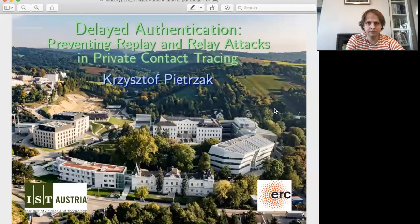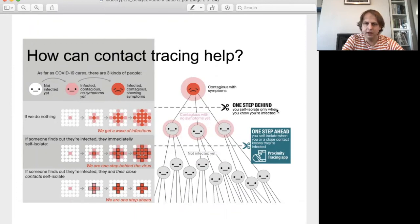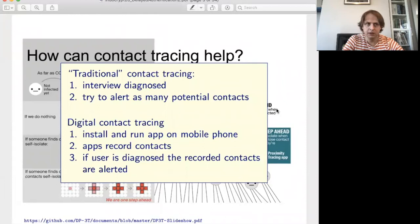Welcome to this presentation on delayed authentication: preventing replay and relay attacks in private contact tracing. My name is Krzysztof Pitschak and I'm at ISTA Austria. This talk is about contact tracing — a public health term where the general idea is to curb the spread of a contagious disease by identifying the contacts of infected people to prevent further spread. Traditionally this was done by interviewing diagnosed people. More recently, digital contact tracing emerged, leveraging the fact that most people carry mobile phones all day. The most popular approach is a smartphone app installed on participants' phones that constantly records and announces itself to other apps, so that later if a person is diagnosed, their contacts can be identified.